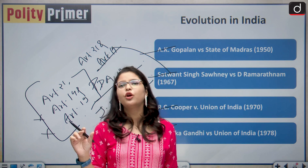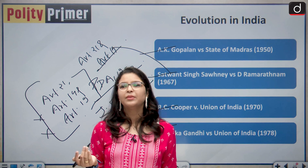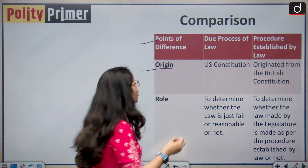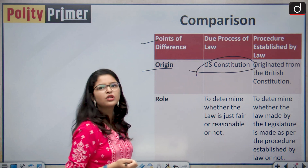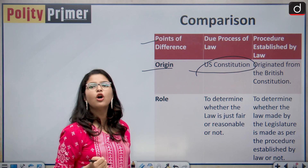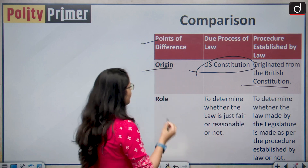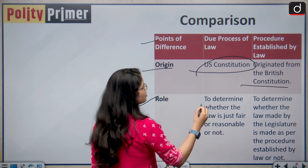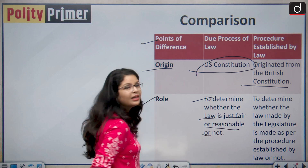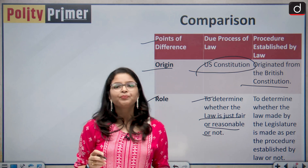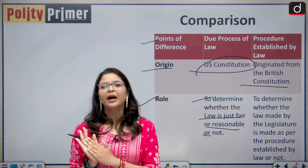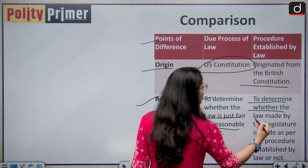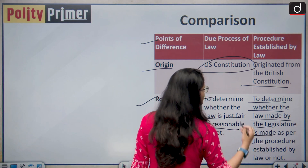Now let us compare both doctrines. First, origin: due process of law originated from the US Constitution, while procedure established by law originated from the British constitution. Regarding role: due process of law determines whether the law is just, fair, and reasonable, and courts can run behind the intention of Parliament. Procedure established by law determines whether the law made by the legislature follows the established procedure — the court analyses whether there is a law, whether it is a valid law, and whether the procedure is strictly followed.